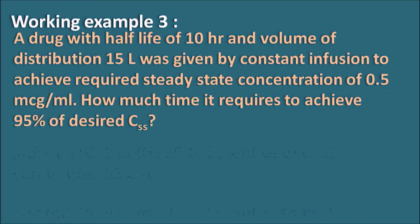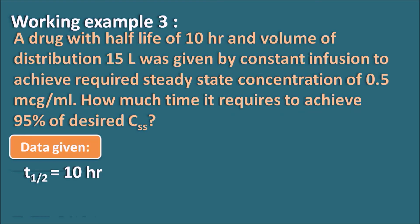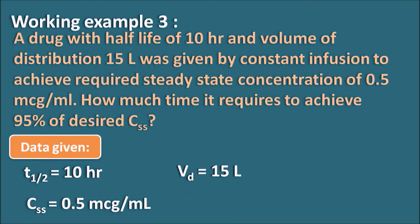Working example three: A drug with half-life of 10 hours and volume of distribution of 15 liters was given by constant infusion to achieve a required steady state concentration of 0.5 microgram per ml. How much time does it require to achieve 95% of the desired CSS? Data given: T½ = 10 hours, CSS = 0.5 microgram per ml, Vd = 15 liters. We have to identify the time required to achieve 95% of the steady state concentration.